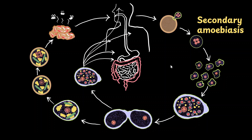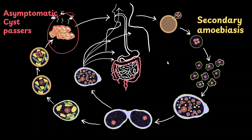While most people experience symptoms, there are some who have absolutely no symptoms, yet their stool contains tetranucleate cysts. They are called asymptomatic cyst passers, and they are the ones who spread the parasite to other people.